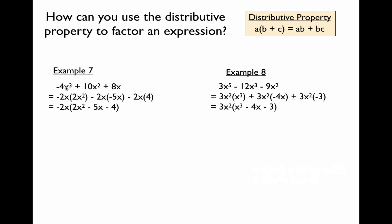In example 7, whenever you're factoring polynomials with a negative leading coefficient — the coefficient of the term with the highest degree — you always factor out that negative, because negative leading coefficients become problematic later on. So instead of factoring out the positive version of the GCF, you factor out the negative version. Looking at the numeric terms negative 4, 10, and 8, they all share negative 2. And x cubed, x squared, and x all share x, so we factor out negative 2x, giving us negative 2x times the quantity 2x squared minus 5x minus 4.